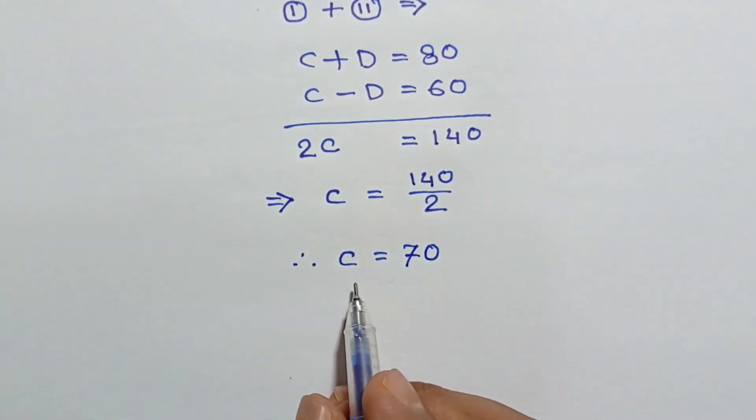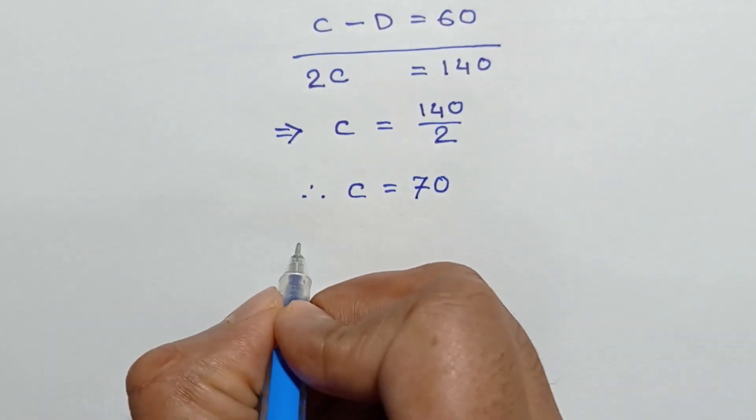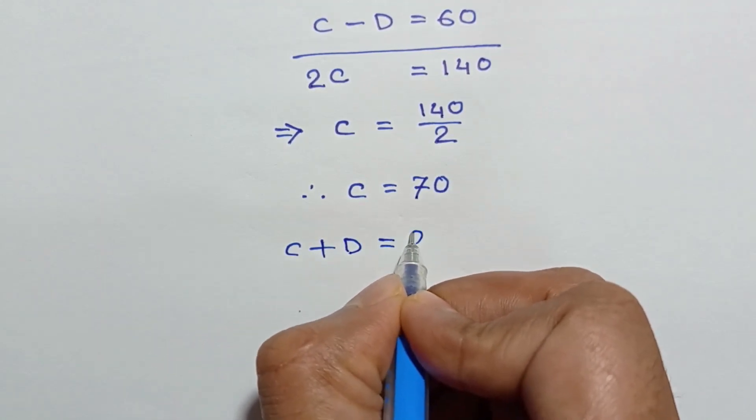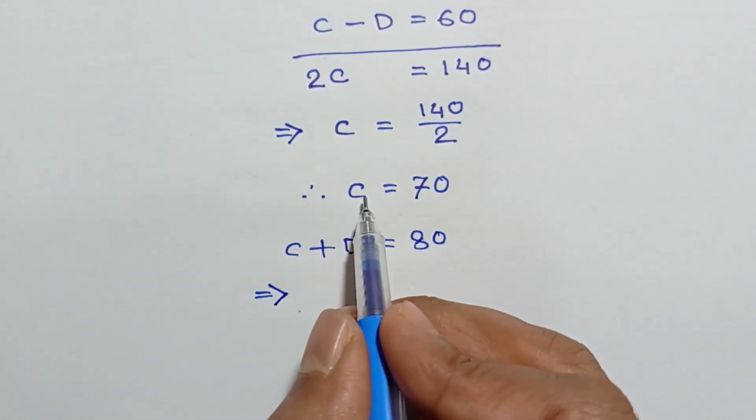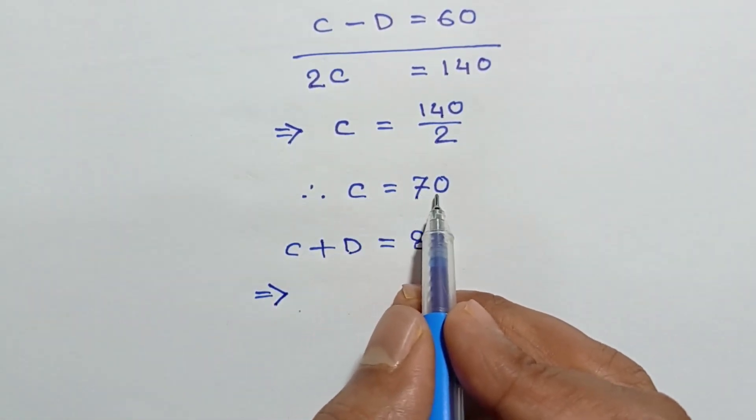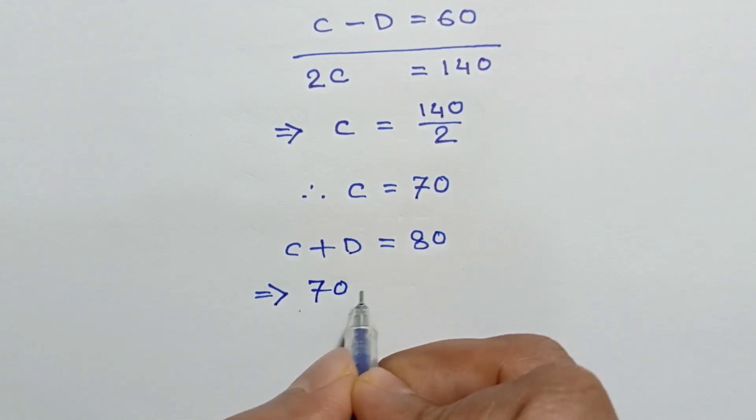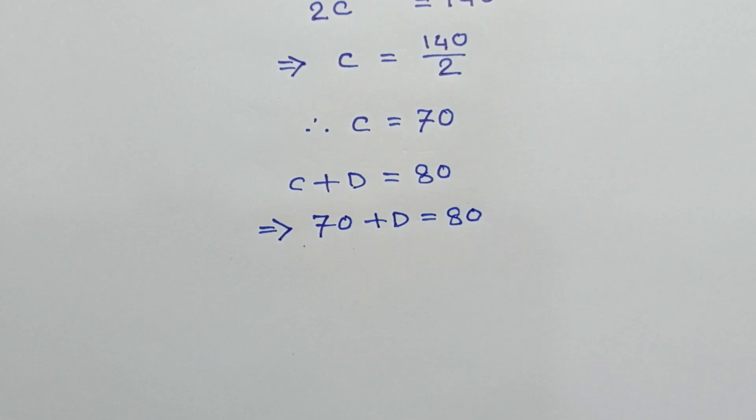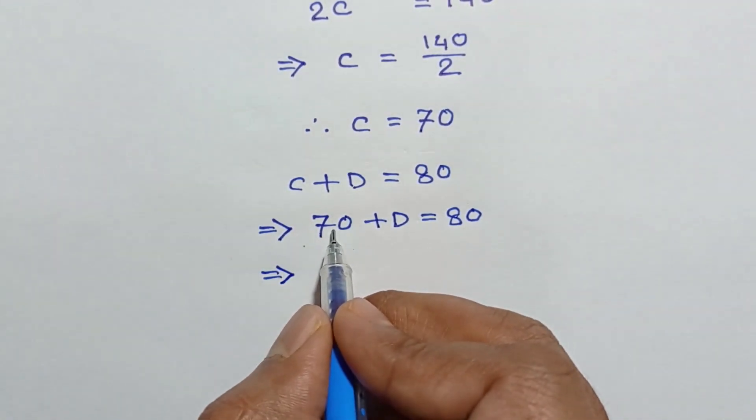Now from equation one, we will have C plus D is equal to 80. Substituting the value of C equals 70, we can write 70 plus D is equal to 80. Taking this 70 to the right side, we will have D is equal to 80 minus 70.